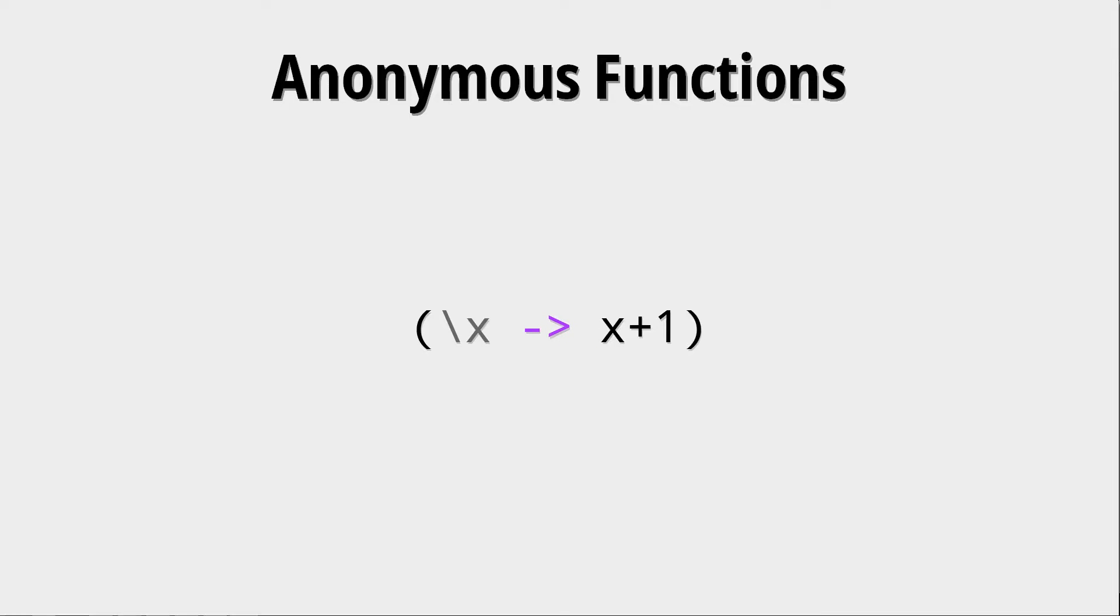Here's a very simple example. This would be a function that takes one argument called x and increments it. We can save the definition of this anonymous function in a variable we call add1. It is very important to see that functions are just values in Haskell. That is why they can be given as an argument.